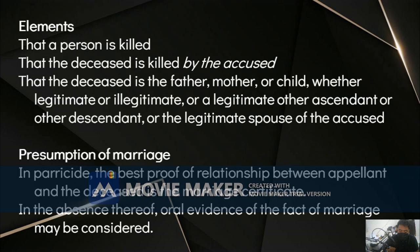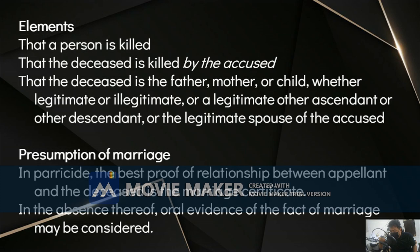Take note: parricide can be committed through reckless imprudence. For example, a husband who was struggling to take a gun away from his child — without intent to kill anyone — accidentally pressed the trigger and shot his wife who was walking nearby. That husband who accidentally killed his wife is guilty of parricide through reckless imprudence. Parricide through reckless imprudence is punished by arresto mayor in its maximum period to prision correccional in its medium period. If committed through simple imprudence or negligence, the penalty is arresto mayor in its medium and maximum periods, as provided in Article 365 in relation to Article 246.